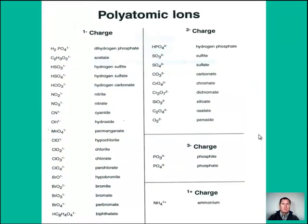We're going to provide you a copy of this on the test — it'll be on the back of your periodic table, so you never have to memorize these. But since I give them to you, you better spell them right, because the spelling is right there on the sheet. Here's what that polyatomic sheet will look like — notice it's broken down by charge: minus ones, minus twos, minus threes, and one positive polyatomic ion.